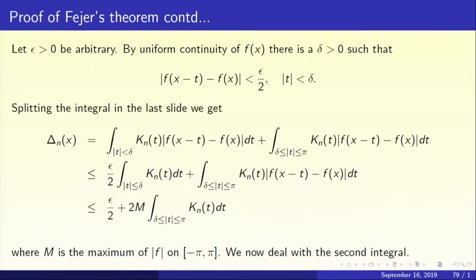By uniform continuity, there is a delta greater than 0 such that mod of f(x minus t) minus f(x) is less than epsilon by 2 when mod t is less than delta. The delta does not depend on x — this is the meaning of uniform continuity.